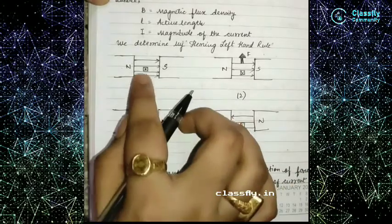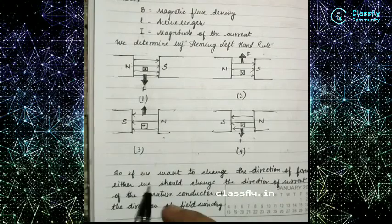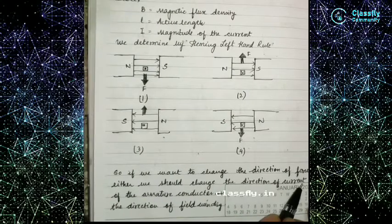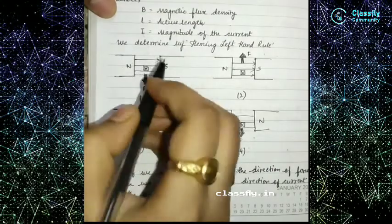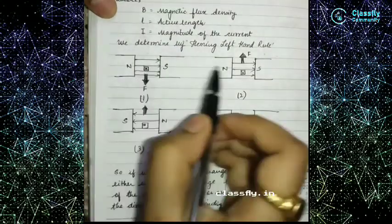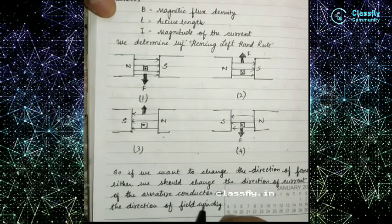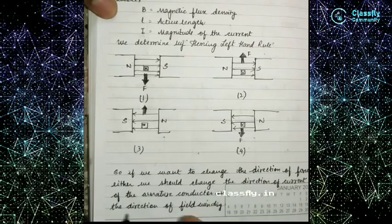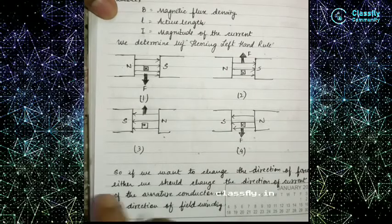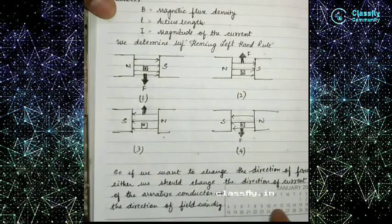To change the direction of force, we should either change the direction of the current (inward or outward) or change the direction of the field winding by changing the pole settings.